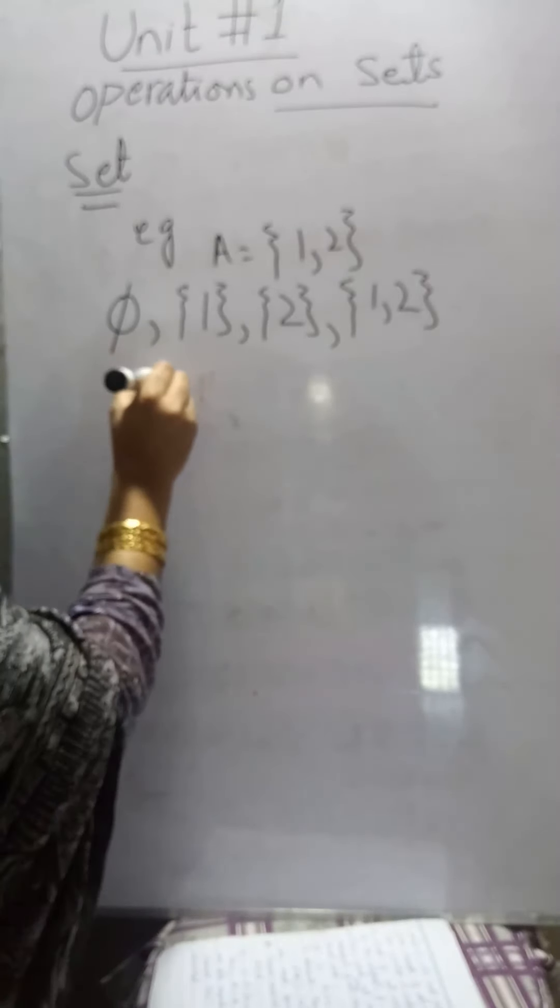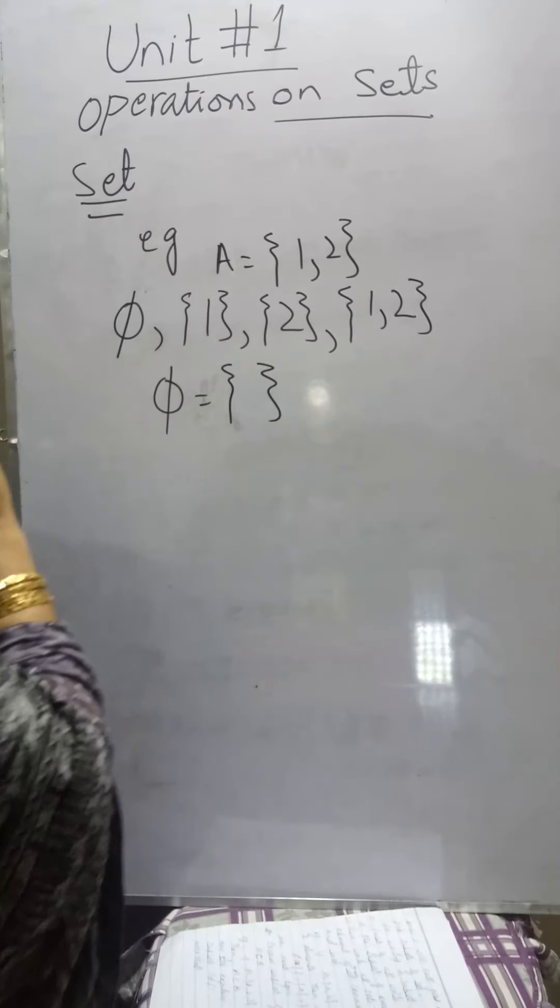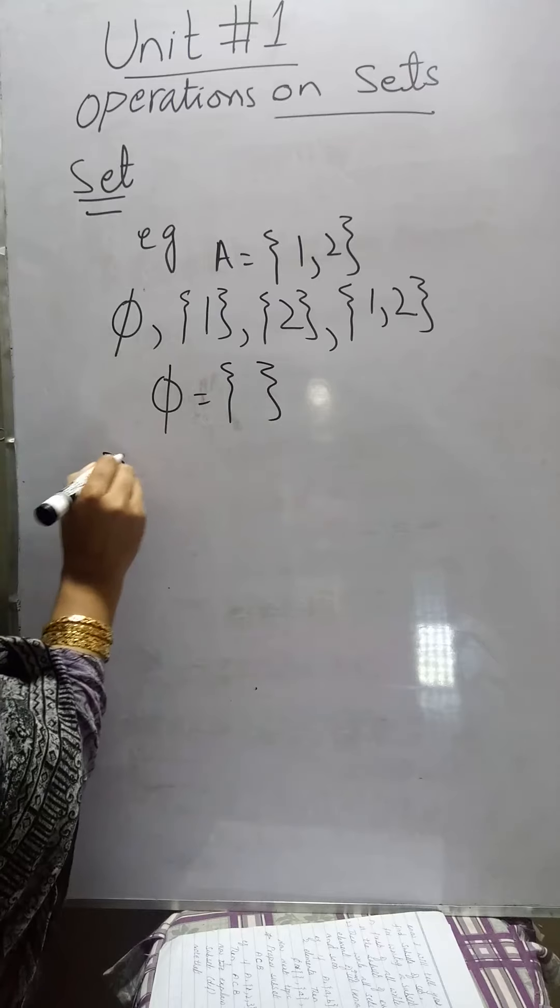The empty set can also be written as the empty brackets. Now what are the proper subsets of a given set?